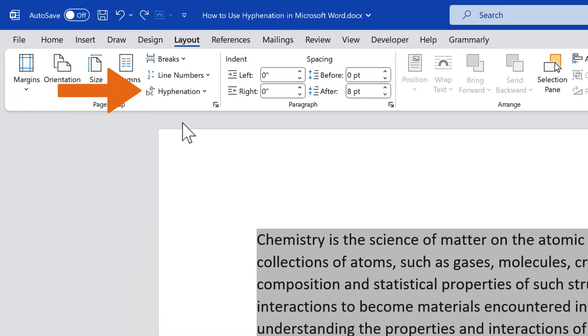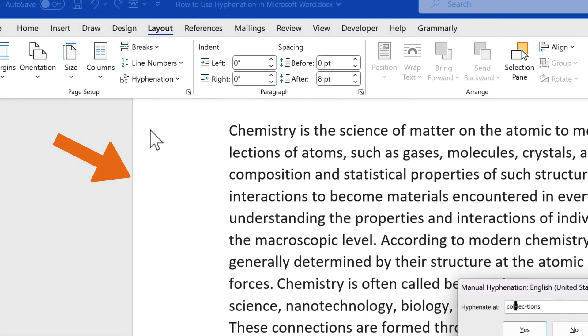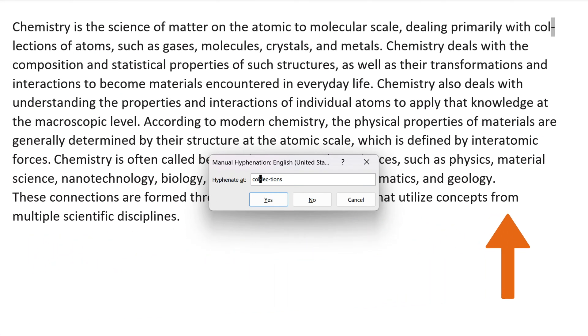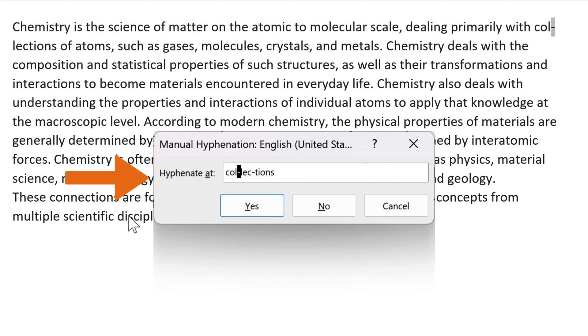To control what is hyphenated, select Manual from the drop-down menu. Word will scan the document for problem words and highlight any potential hyphenation points with a grey color. If it finds one, the Manual Hyphenation dialog box will pop up.